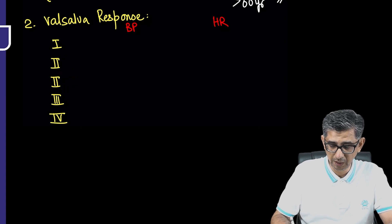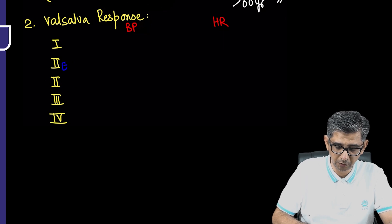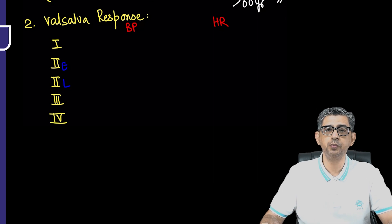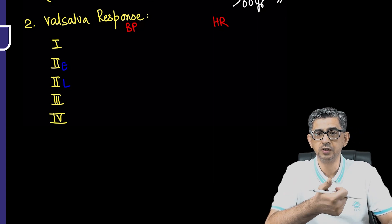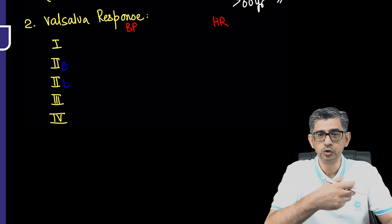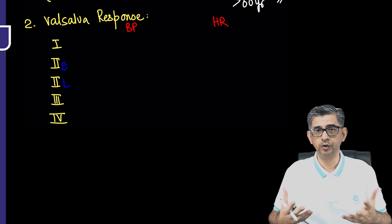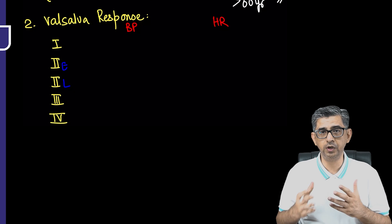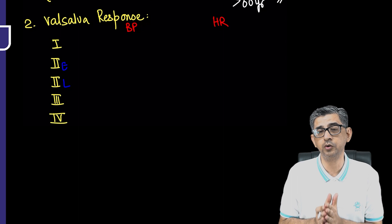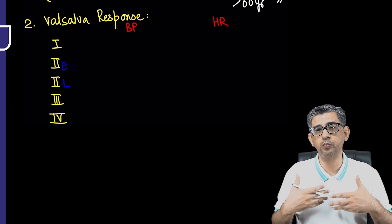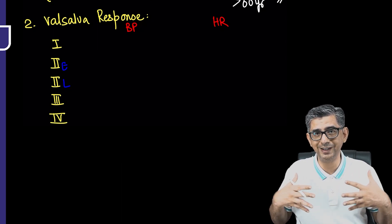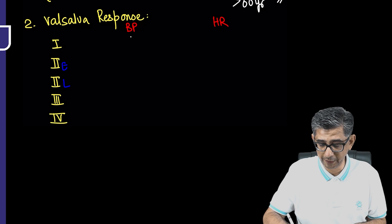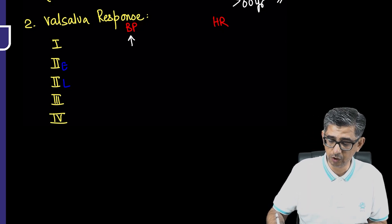Instead of Phase 2a and 2b, we can write 'E' for the early part and 'L' for the late part of Phase 2 of the Valsalva response. In Phase 1, the patient is asked to forcefully breathe out against a closed glottis at a pressure of about 40 mmHg. This increases intrathoracic pressure, which causes compression of the aorta, so blood pressure will tend to slightly increase. As BP rises, the baroreceptor drive kicks in to decrease heart rate.